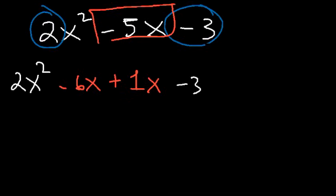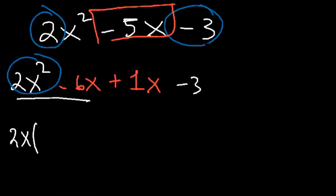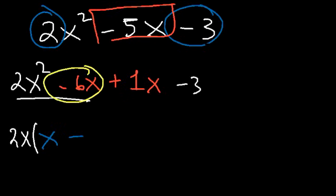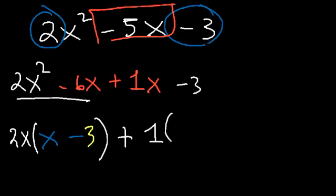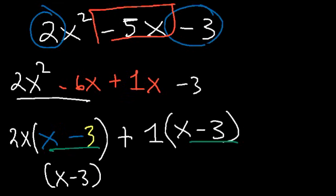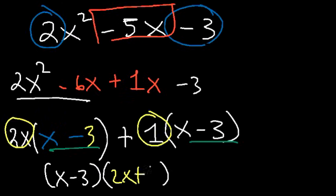We need to factor by grouping. In the first two terms, the GCF is 2x. So 2x squared divided by 2x is x, and negative 6x divided by 2x is negative 3. For the last two terms, we take out a 1, giving us x minus 3. Since both groups share x minus 3, we factor it out. What's on the outside gives us 2x plus 1. So the factored form is (x minus 3)(2x plus 1).